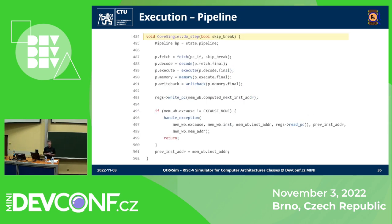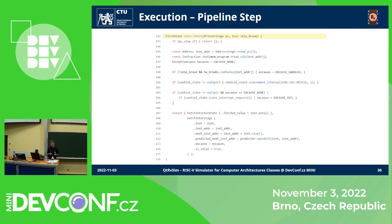Looking at the execution, the simulator is written in a very similar manner to how you would do it in a hardware description language. There is a function for each stage of the pipeline which produces a new state of the inter-stage registers. Peeking inside fetch, we can see that it takes the previous inter-stage registers, does some operations — reading from memory, managing interrupts — and finally writes to the next inter-stage register.